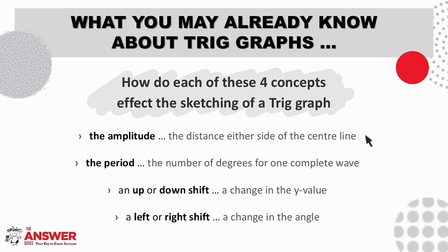The amplitude is the distance either side of the center or midline. The period is the number of degrees for one complete wave. The up and down shift is when the graph as a whole moves up or down because of a change in the y value and the left and right shift impacts where the wave of the graph starts because of a change in the angle.